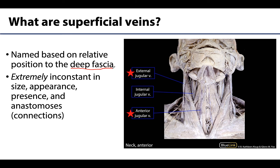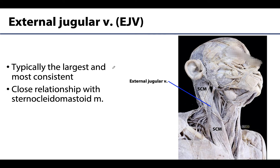Superficial veins are the most likely to have variations. Deeper veins can certainly be variable, but at lower frequencies than their superficial counterparts. The most prominent and most consistent superficial vein in the anterolateral neck region is the external jugular vein, and I'm going to outline it here.